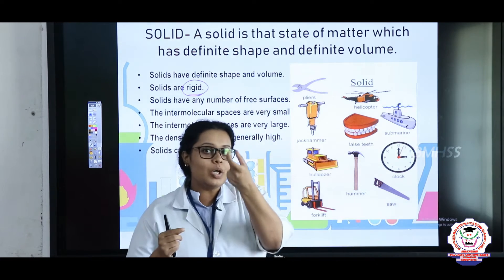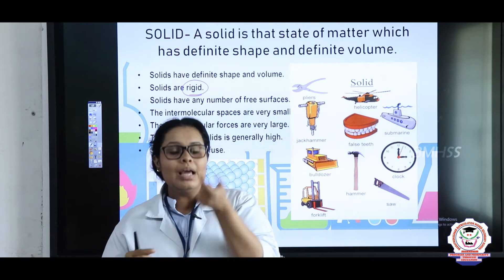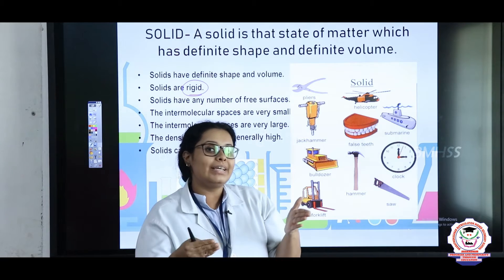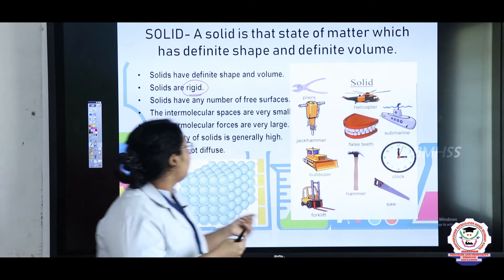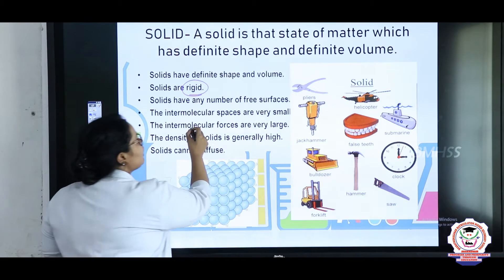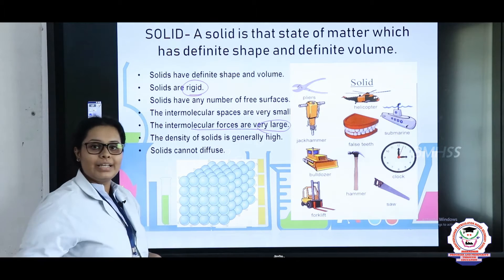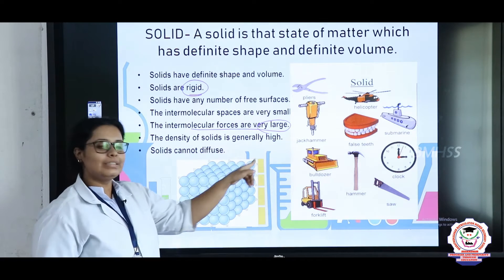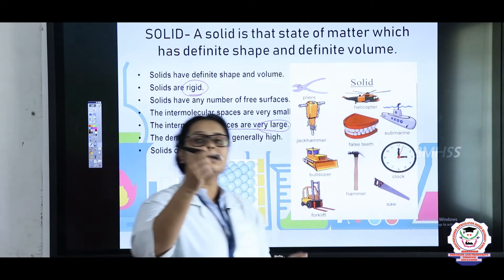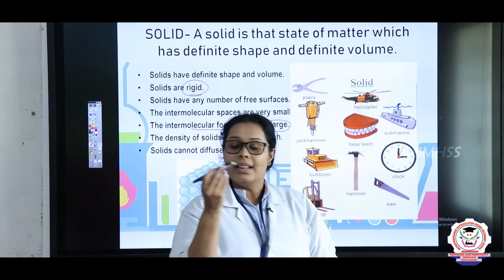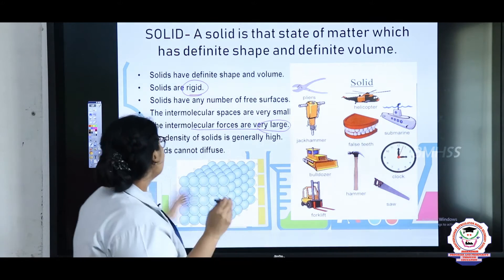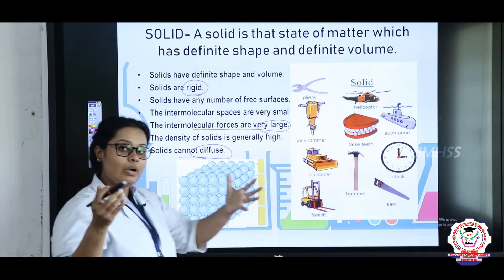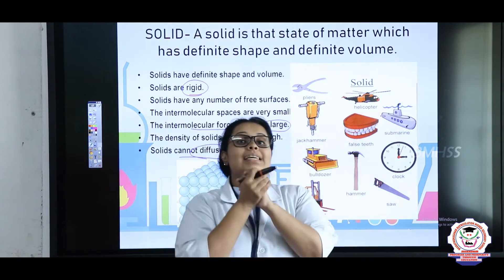If the intermolecular spaces are very small, then the intermolecular distance, or you can call it as space, will be very large. The density of solids is generally high — if it is having a definite shape, then the density will be too high. Solids cannot diffuse; they cannot mingle, they cannot mix easily.